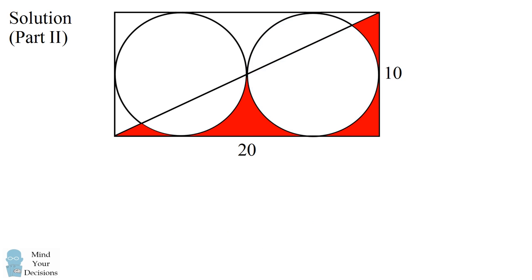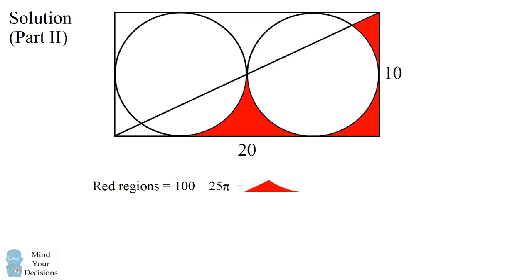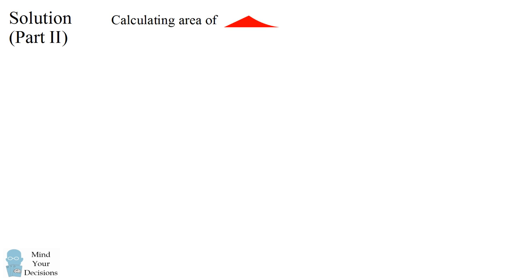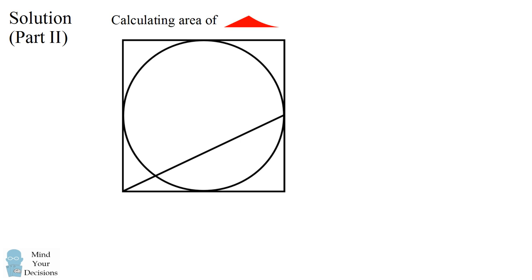Now let's tackle the second part of the problem. We know the area of the red regions as illustrated is 100 minus 25 pi. The second part says: what would happen if you remove this region from the lower left-hand corner? We can solve for the red regions by solving for the area of this particular piece. To do that, we'll consider a simplified diagram — just one of the circles inside a square with side length 10.